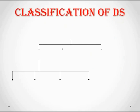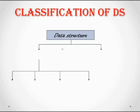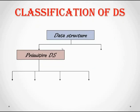When it comes to primitive data structures, they directly operate upon the machine instructions and are predefined in the language. A primitive data structure is going to hold only a single value in one specific location.